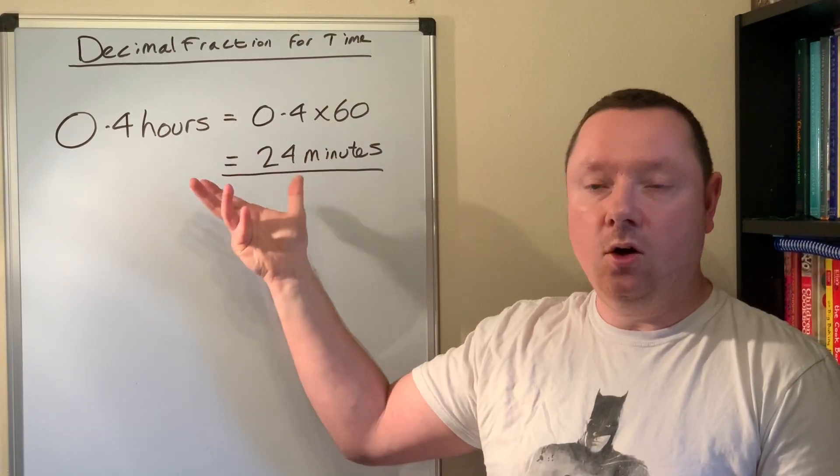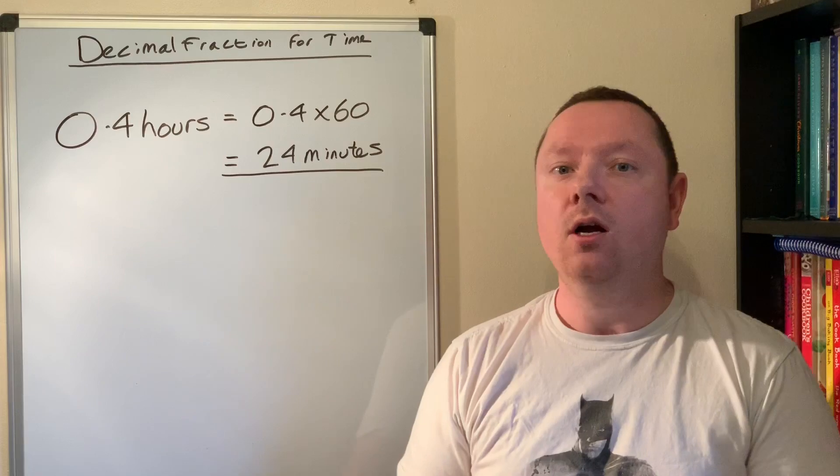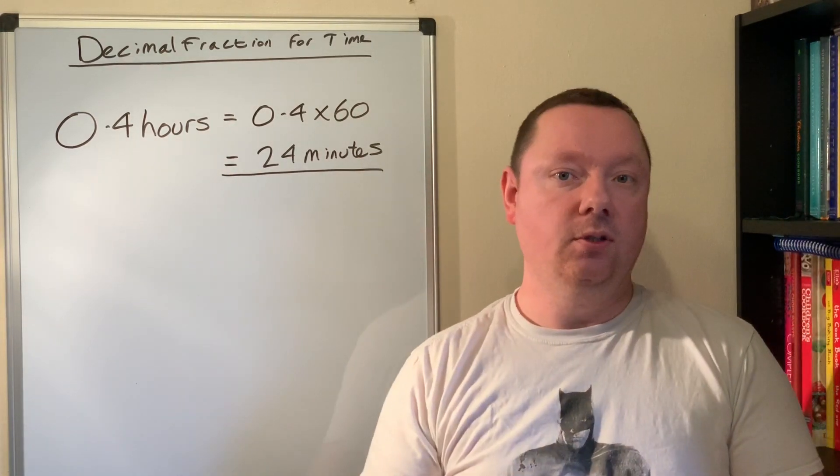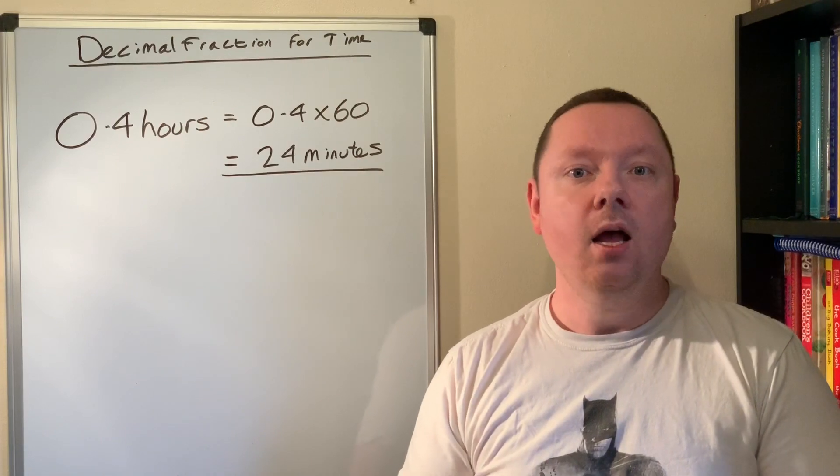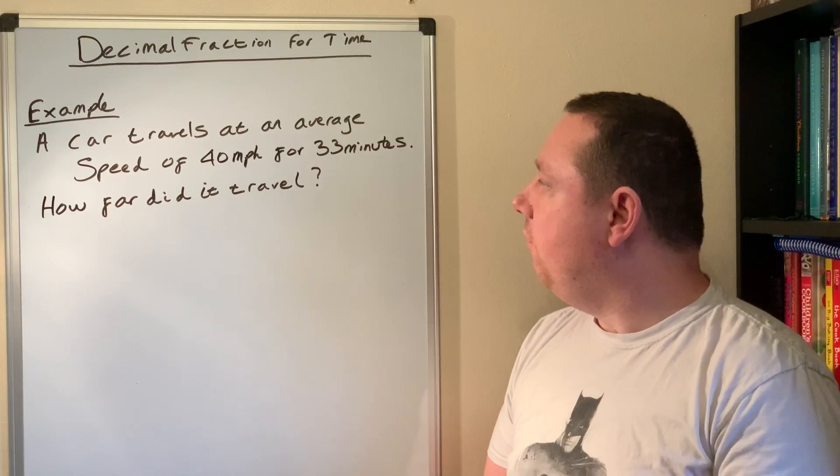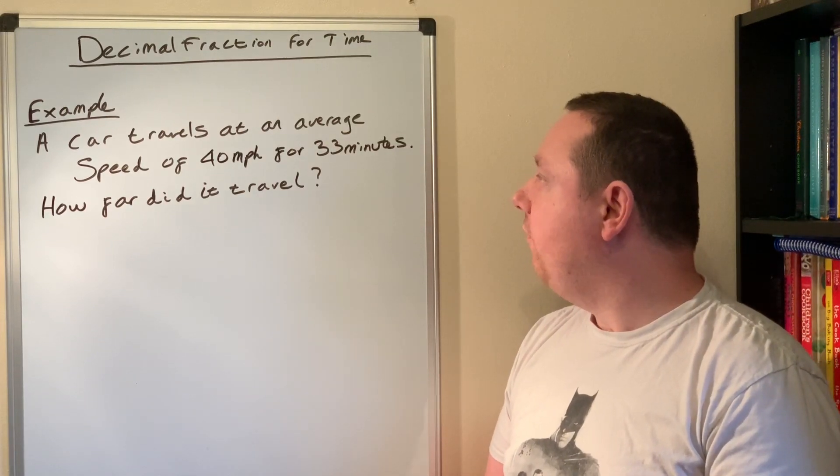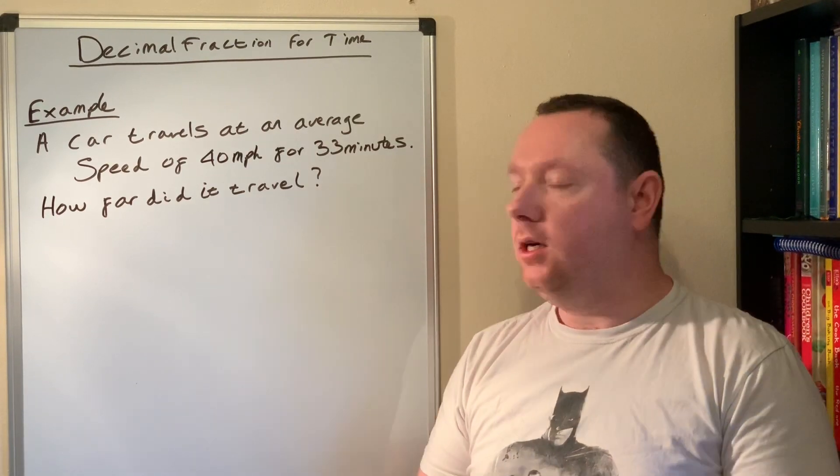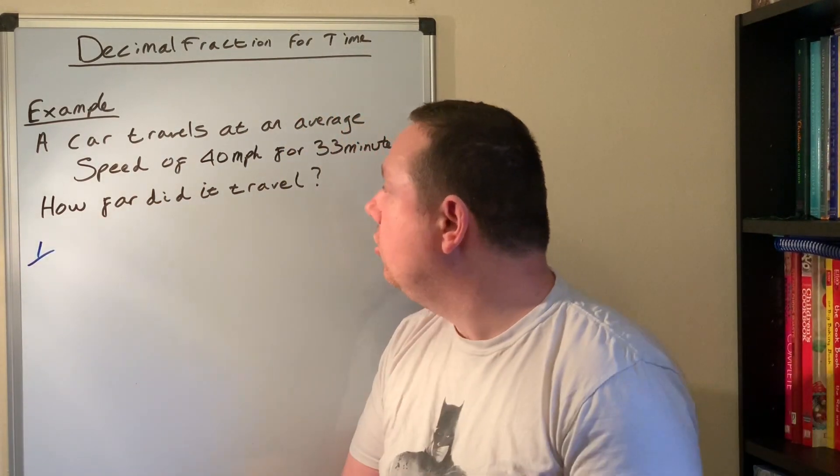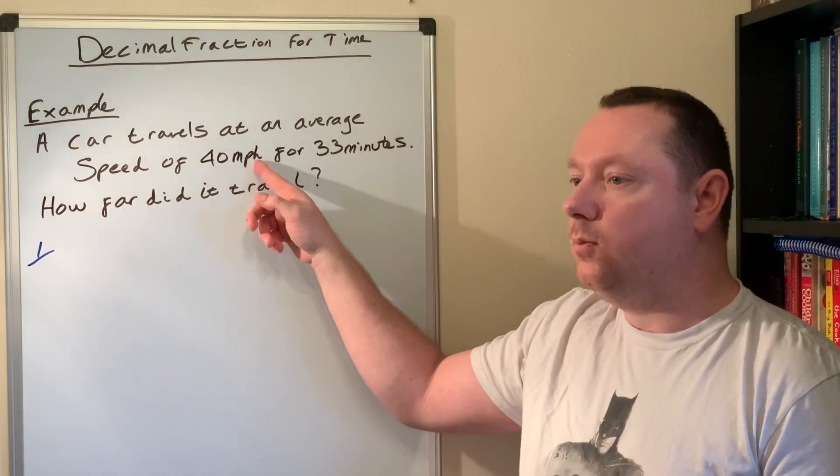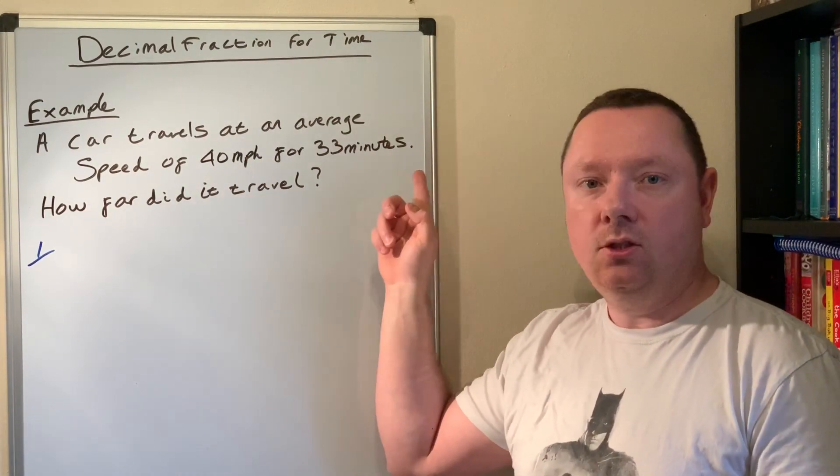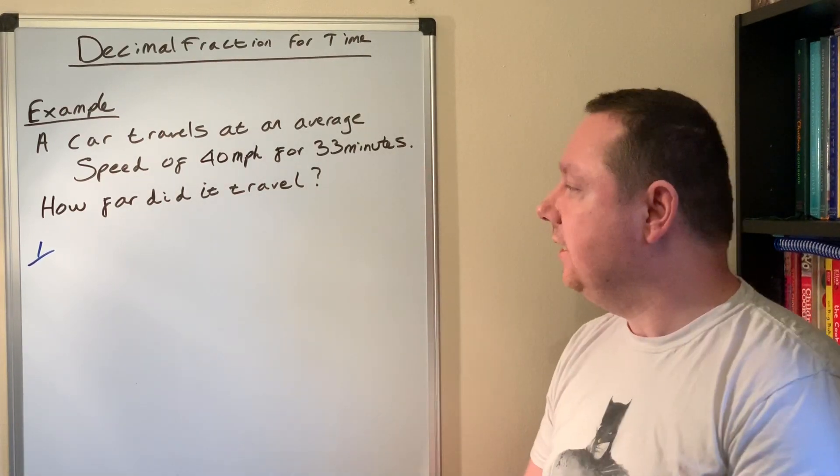And it will be in the context of the question you'll know whether you need to leave your answer as hours and minutes, which means you'll have to do it this way, or whether you'll be happy enough to leave your answer as just a decimal hour. So for example, a car travels at an average speed of 40 miles per hour for 33 minutes. How far did it travel? Step one is the same as in previous examples where you've got two different things: you've got hours for the miles per hour, you've got minutes for the time. So you're always changing minutes to a fraction of an hour or a decimal.